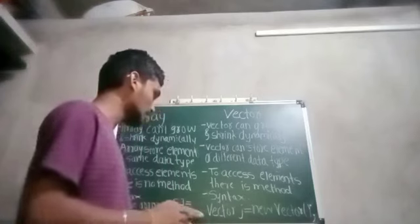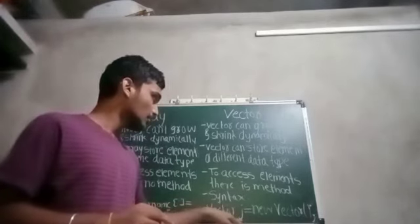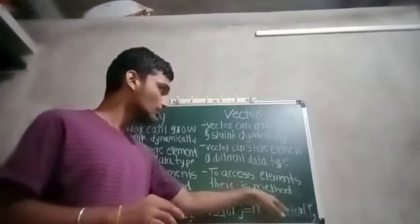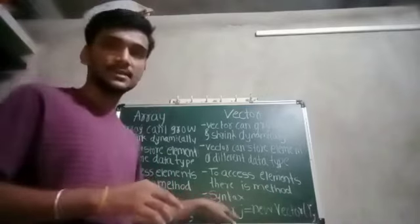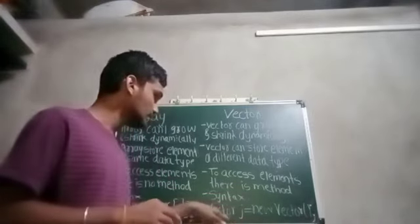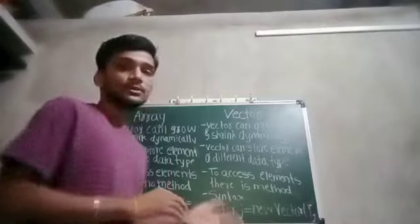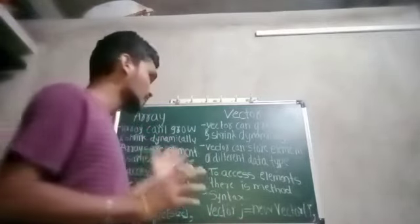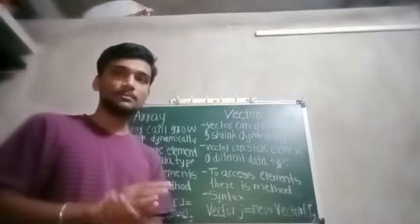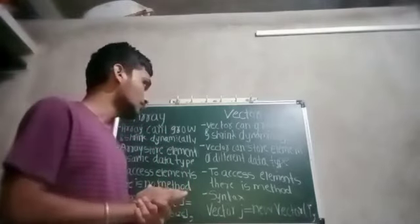The syntax of a vector is: vector, then the name of the vector, equals new vector. This is the syntax of creating an object of it. Vector is nothing but a class. Whatever drawbacks exist in arrays are removed in vectors. For that purpose, vectors can be used.